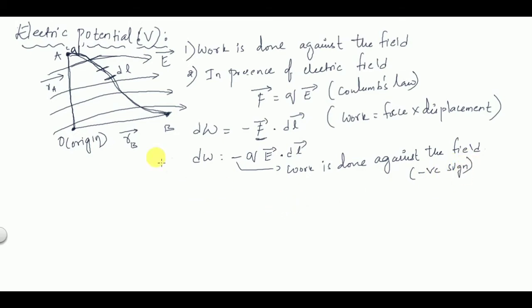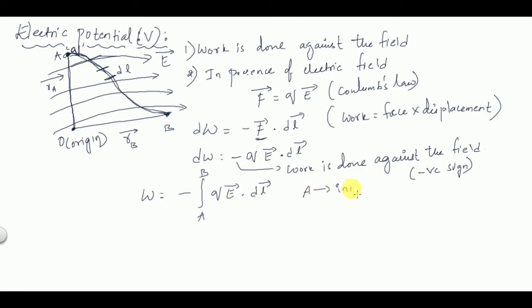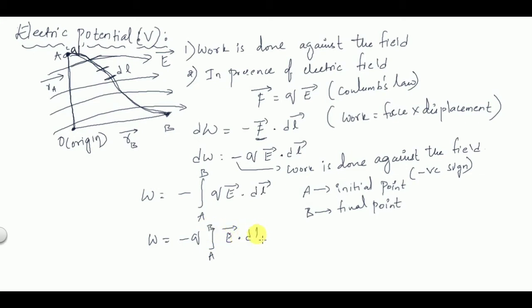When moving the charge from A to B — where A is the initial point and B is the final point — since Q is a constant, we can take it outside the integral. So total work done is W = −Q ∫(A to B) Ē·dL̄.